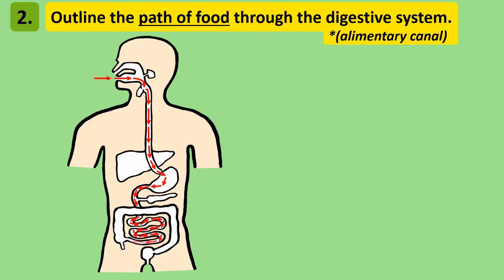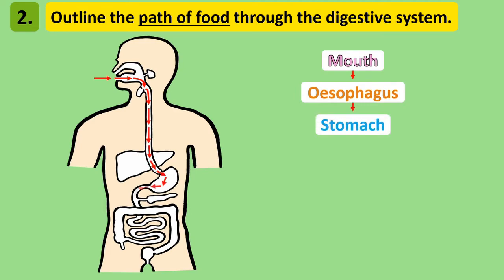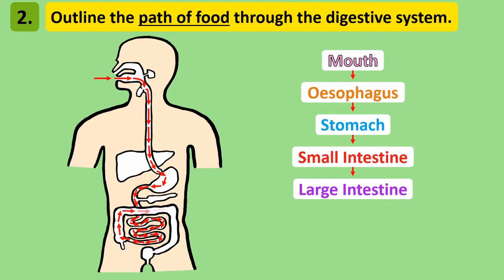You need to know the order in which food passes through each part of the digestive system. Once food enters your mouth, it passes through the oesophagus, stomach, then to the small intestine, onto the large intestine, and then the rectum before leaving the body through the anus.